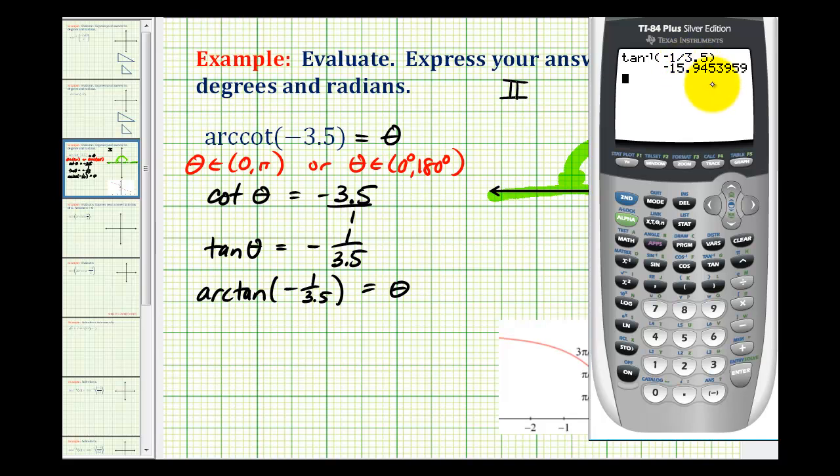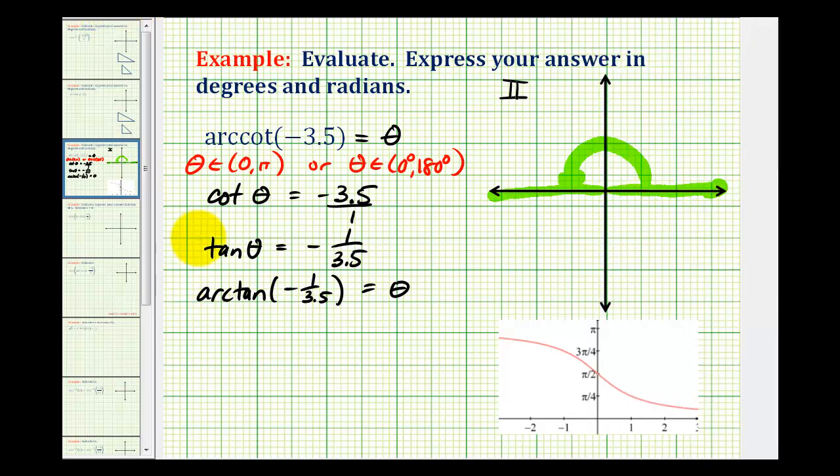But this can't be our angle because this is in the wrong quadrant. But let's go ahead and write this down. The calculator gave us theta is approximately negative 15.95 degrees, which would be this angle here. Which is not our angle, but it does tell us the reference angle that we need in the second quadrant.